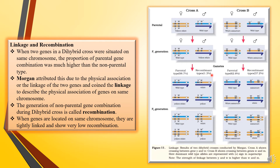In Cross B, Morgan considered eye color and wing size (miniature wing). This wing size gene is also located on the X chromosome but is far away from the eye color gene. He considered white colored eye and miniature wing versus the wild type of red eye and normal big wing. In the F2 generation after self-crossing, the parental type was 62.8% whereas the recombinant type was 37.2%.